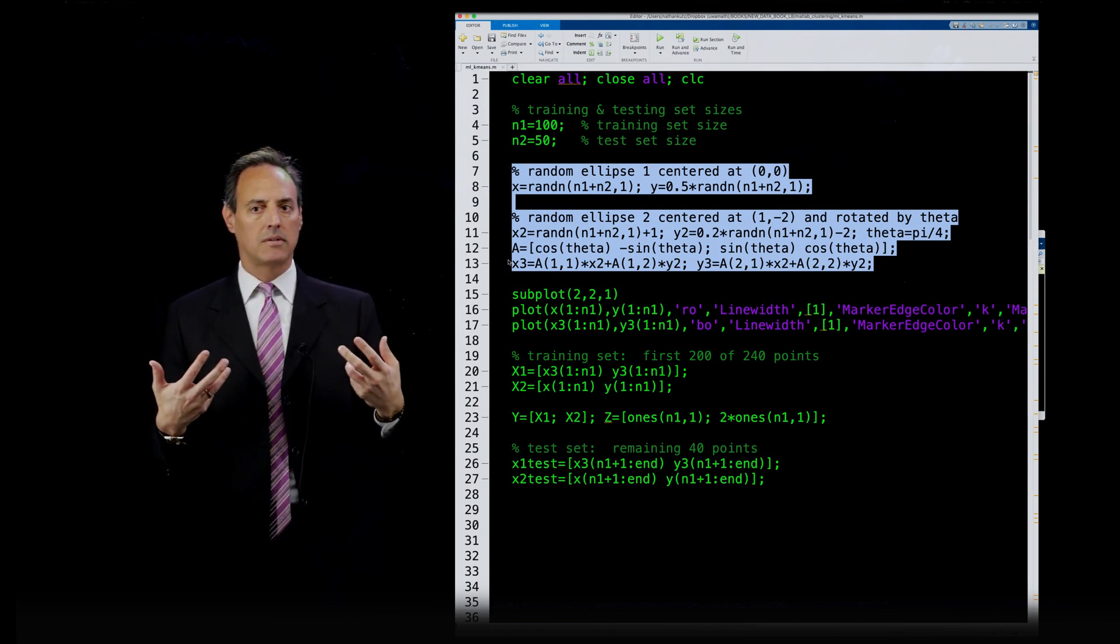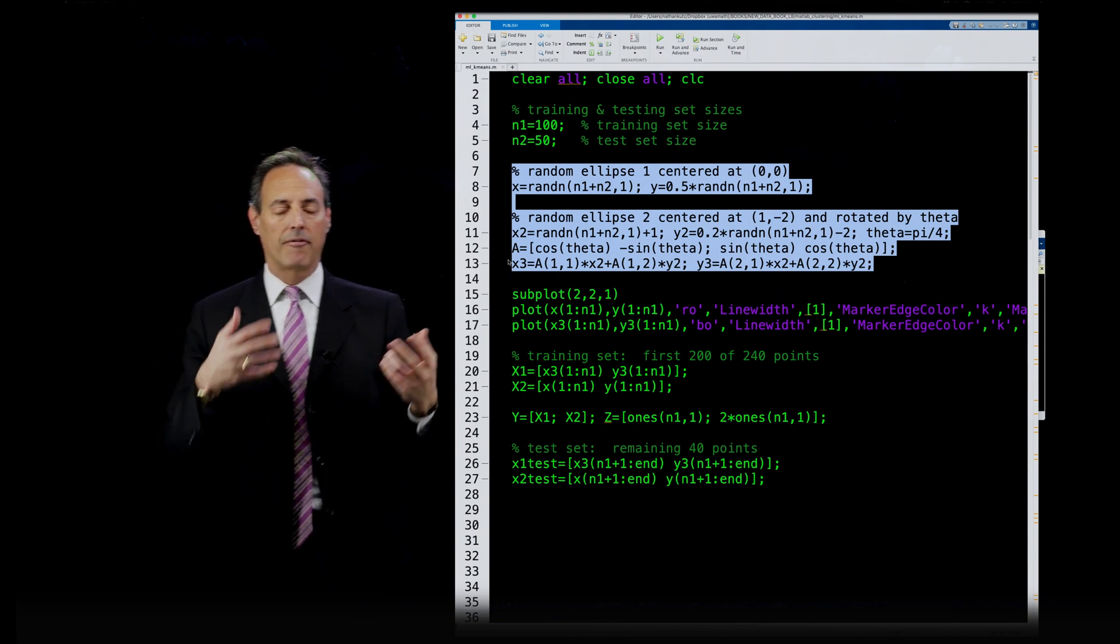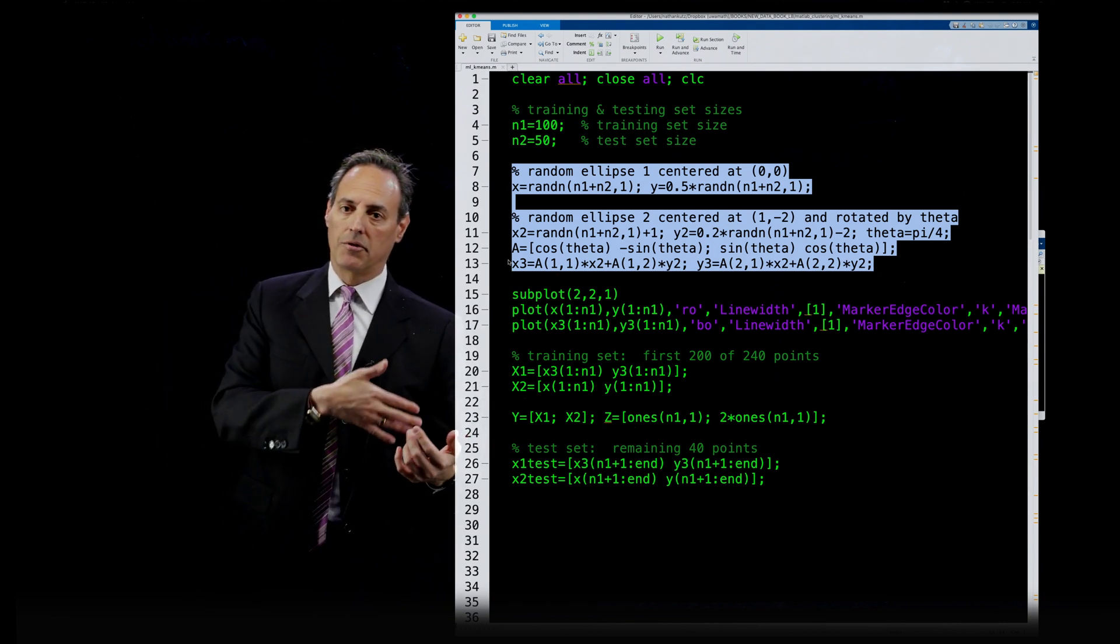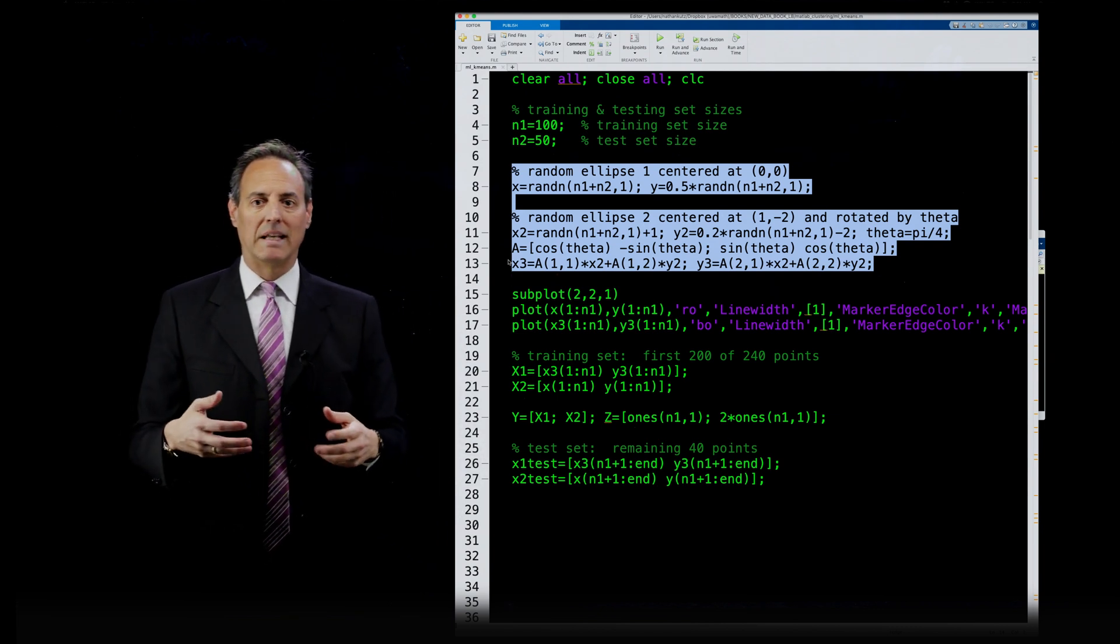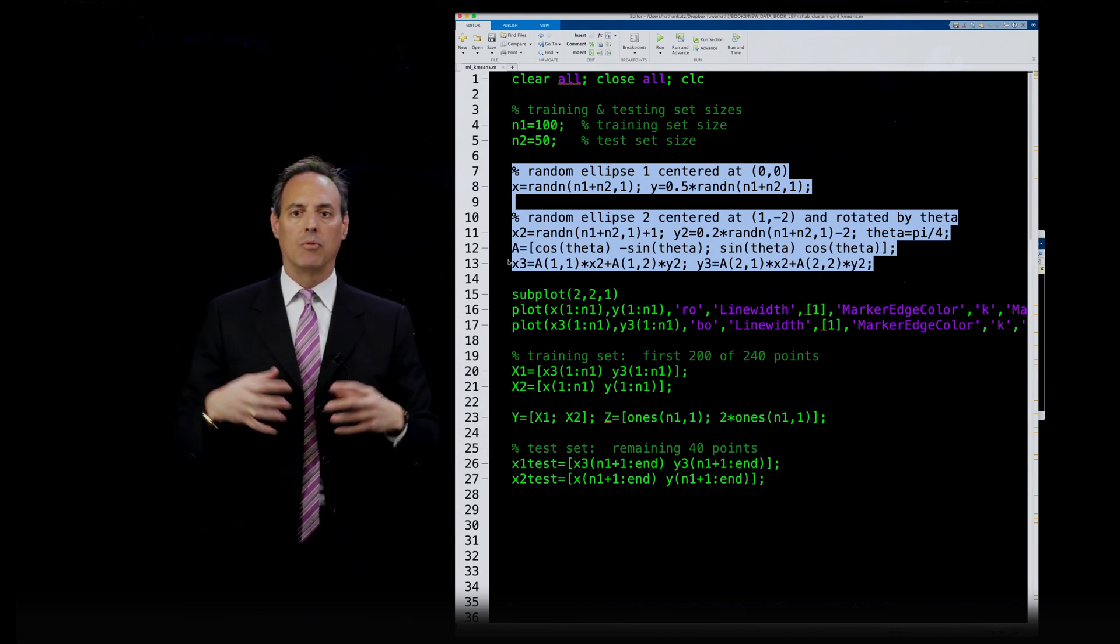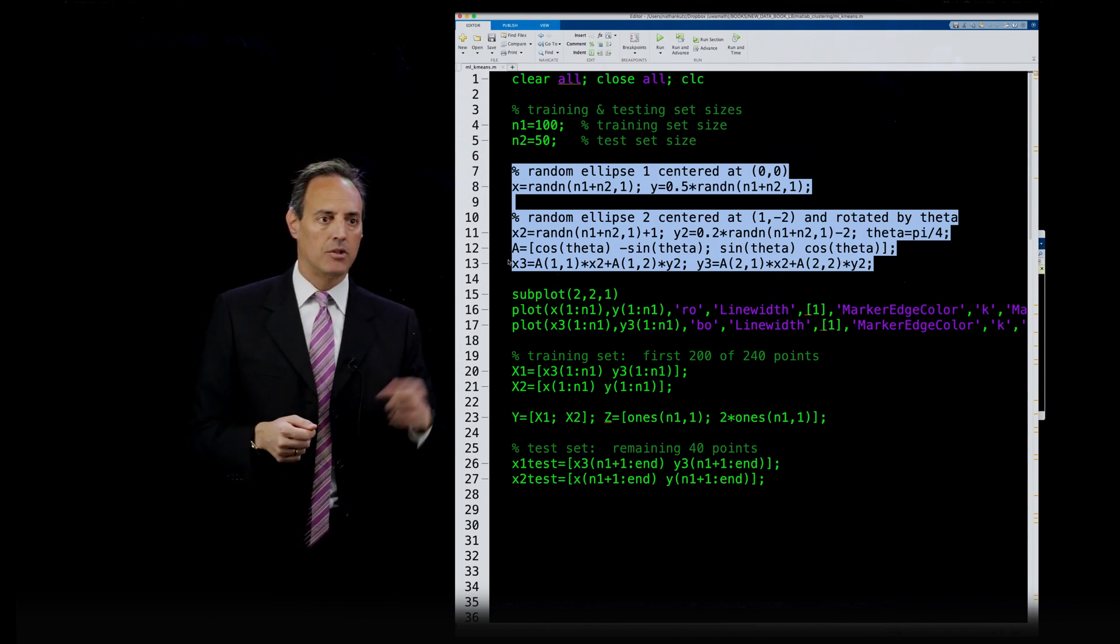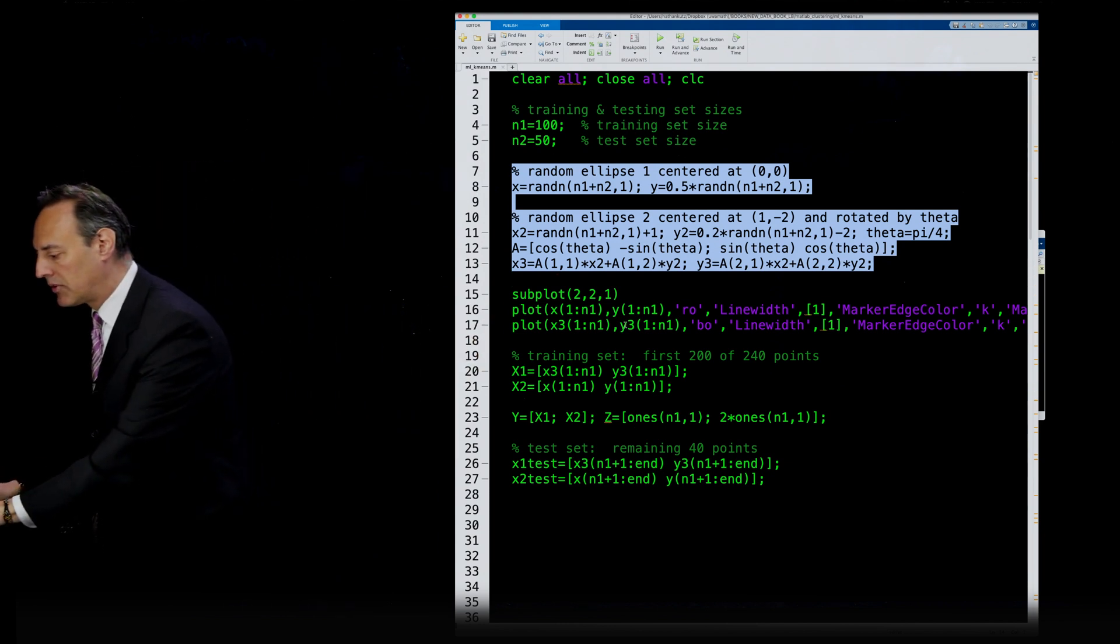So in other words, I'm going to show you what this looks like in a moment. I'm going to make two data sets. They're going to have 150 points each. And the first 100 are going to be for training. The second 50 will be for testing. So my testing and my training data will be drawn from the same random distributions.